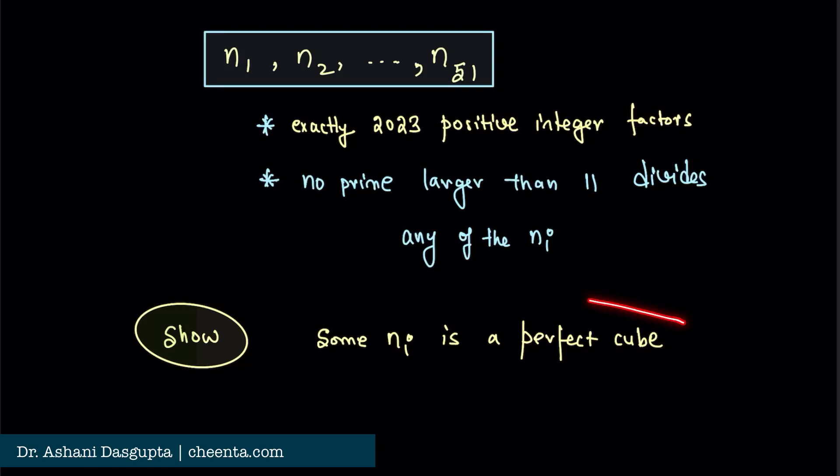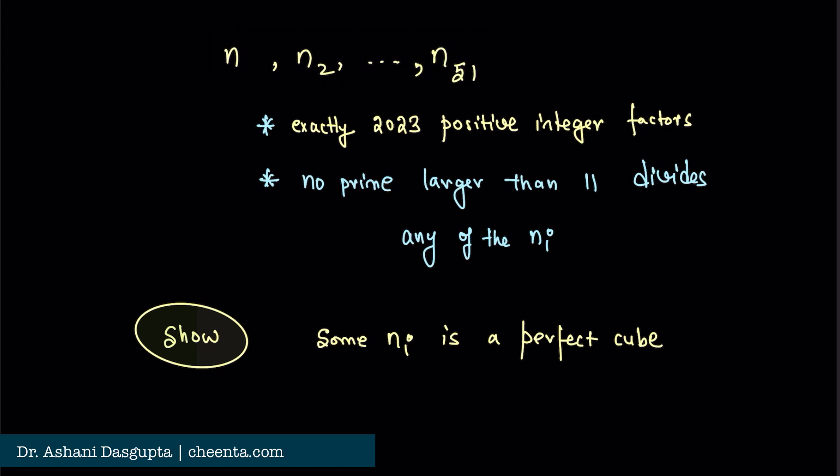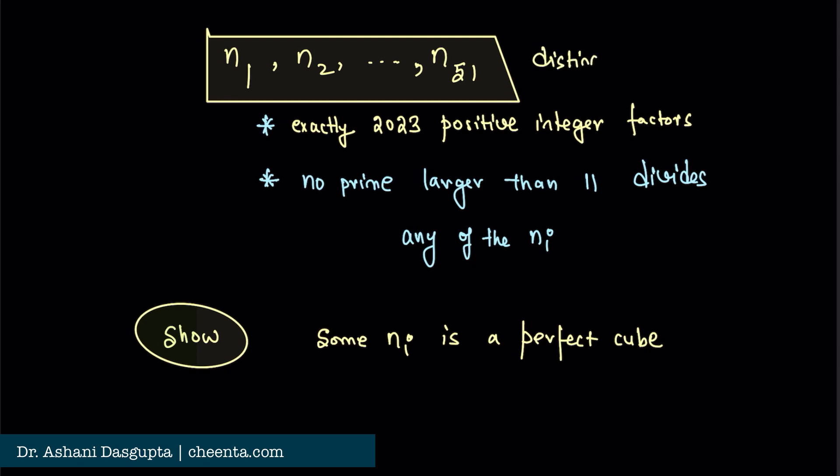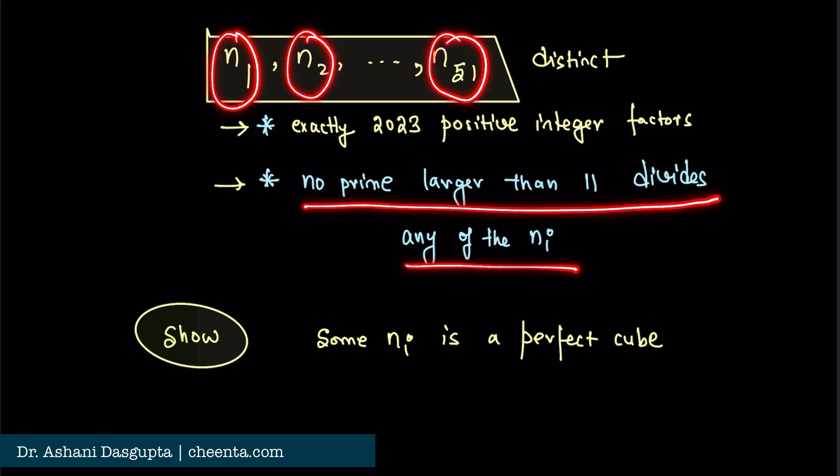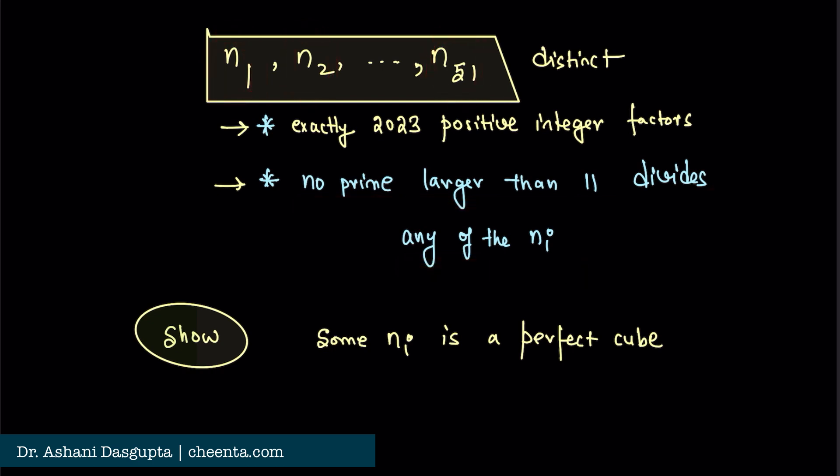This is a problem to search for a perfect cube in a given set of numbers. Let's see the problem statement. This is from ISI Entrance 2023.